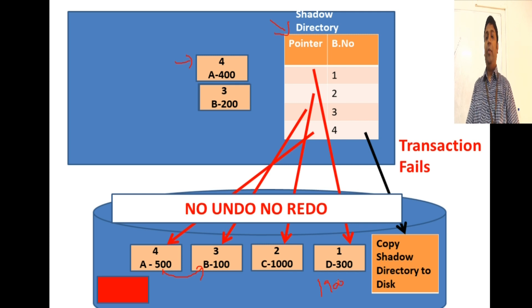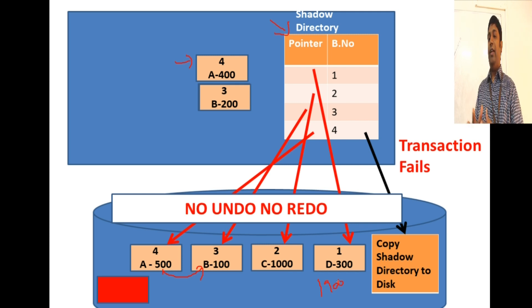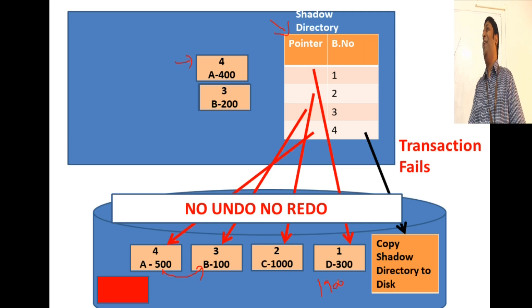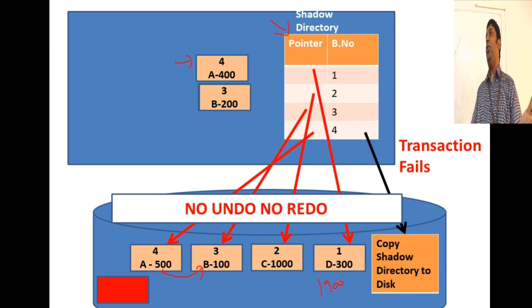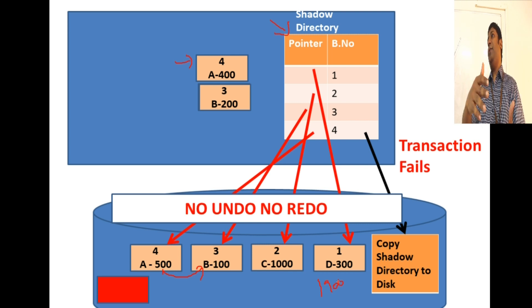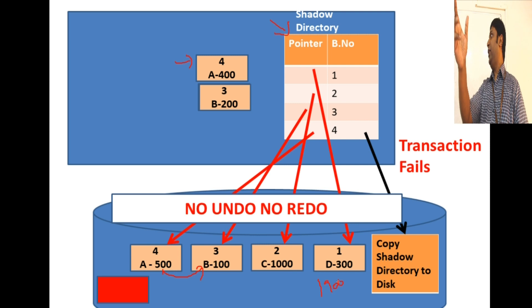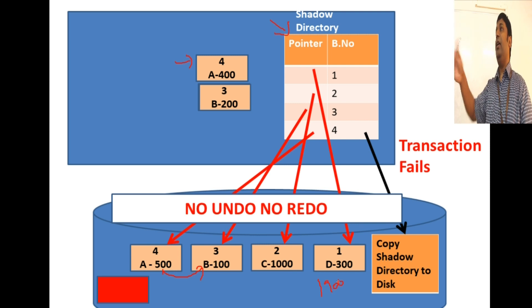One important point: before the transaction starts, we must write the shadow directory to disk because when an instance crashes you lose everything on RAM. To bring the database back to a stable state, you read the shadow directory from the hard disk into main memory and make it the current directory.